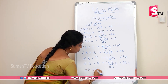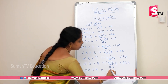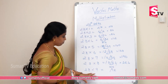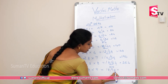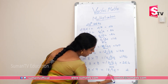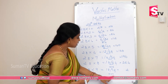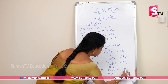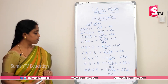28 into 9. 9×8 = 72. 9×2 = 18. In units place, write 2, and 18 plus 7. That is 252.